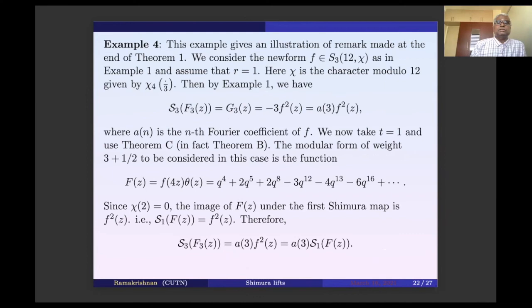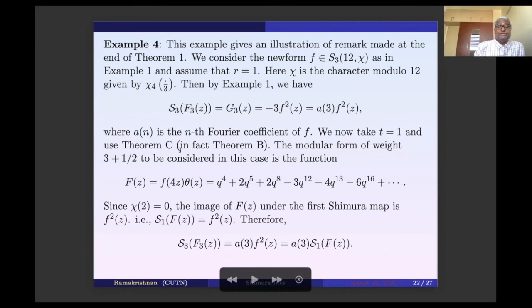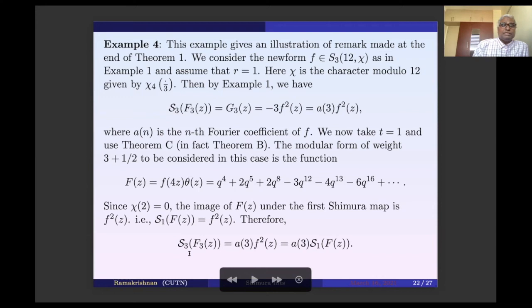Example 4 illustrates the relation between our theorems and Hansen-Nakvi. Using the same newform f of weight 3, level 12, r=1: Example 1 gives S_3(F_3) = -3*f^2(z) = a(3)*f^2(z). Now take t=1 and use Hansen-Nakvi's result: capital F = f(4z)*theta(z). Since chi(2)=0, the image S_1(F) = f^2(z). Therefore S_3(F_3) = a(3)*S_1(F). This demonstrates that applying S_t to F_t gives a(t) times the first Shimura image of F, confirming the relation between our results and Hansen-Nakvi's.